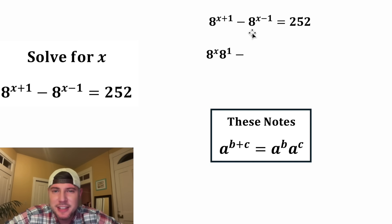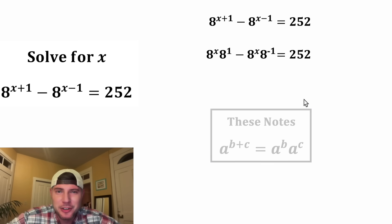And then we're going to subtract this. 8 to the x minus 1 would be 8 to the x times 8 to the negative 1. And this will still be equal to 252.